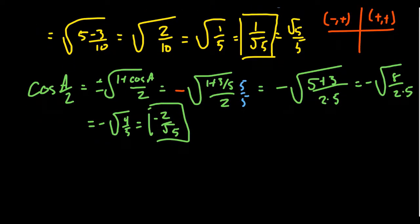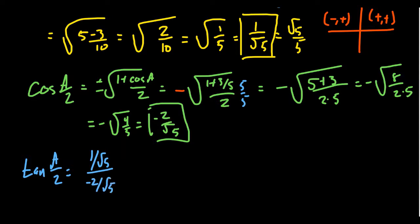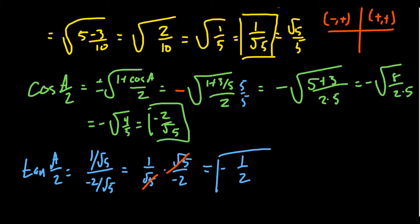Now we can compute tangent of a/2. We already have sine and cosine, so we don't need a separate half-angle identity for tangent. Tangent of a/2 equals sine of a/2 over cosine of a/2, which is (1 over √5) divided by (negative 2 over √5). Dividing by a fraction means multiplying by the reciprocal: (1/√5) times (√5 / negative 2). The square roots of 5 cancel, giving tangent of a/2 equals negative 1/2. We could also easily find secant, cosecant, and cotangent of a/2 from the values we've collected.